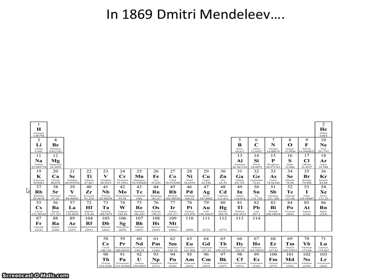Similarly, fluorine, chlorine, bromine, and iodine are all strong oxidizing agents. And neon, argon, krypton, and xenon are all inert gases.